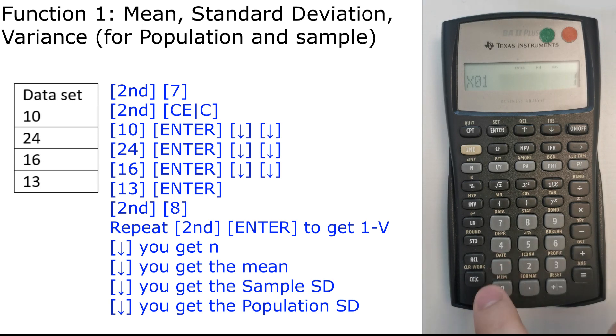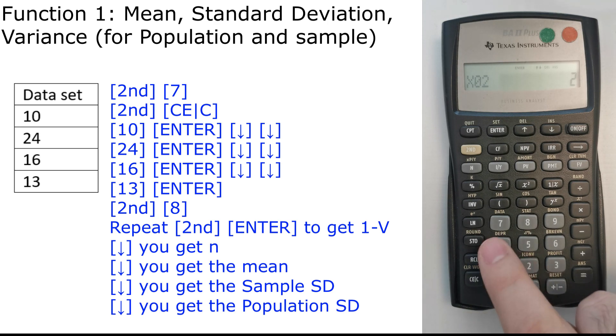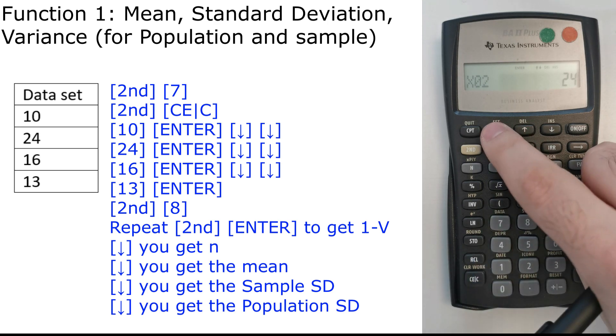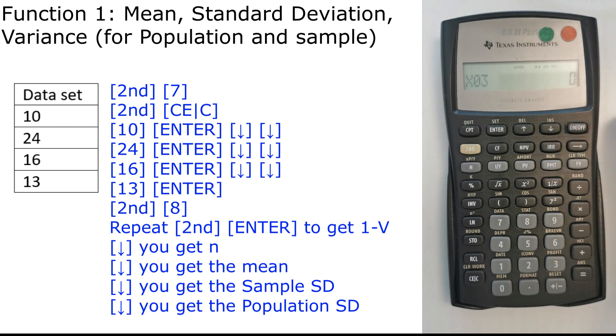Now we input the data that we have. We press 10, enter. We've inputted X1, then we go downwards. We have Y01, we're going to keep it as 1 for now. The next question we will input Y as a probability, but for now keep all the Ys as 1. Then we press downwards again, we get X02, so we're going to input 24. Enter. We go downwards, Y02, we keep it also as 1.